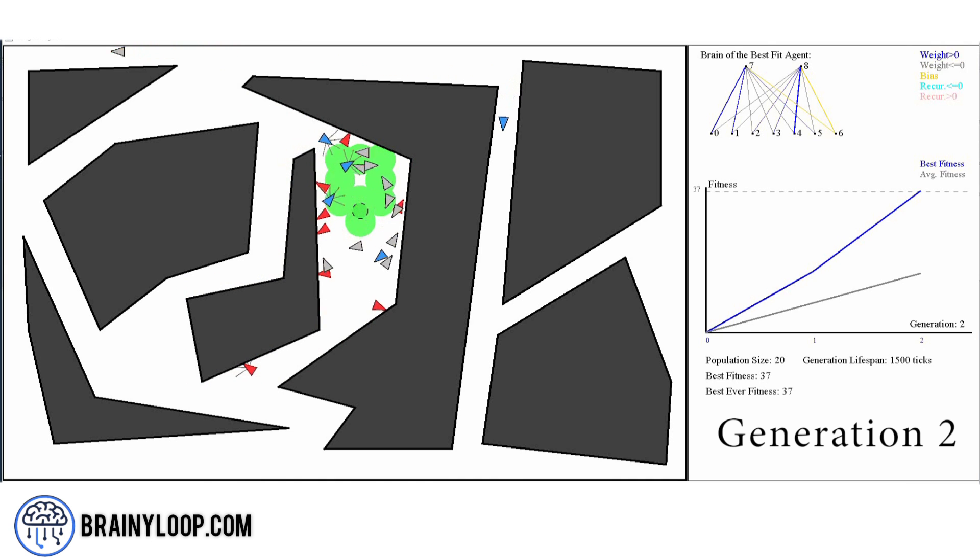Notice how most of the second generation agents are either rotating around the same area or colliding with the walls. The green color highlights the area visited by the best performing agent. By the third generation, we start to see more agents learning to explore further than the central base and have less collisions.